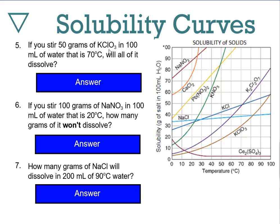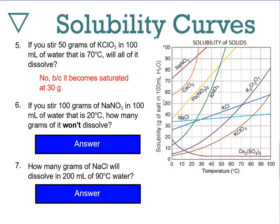If you stir 50 grams of potassium chlorate in 100 mL of water at 70°C, will all of it dissolve? The potassium chlorate curve at 70°C shows roughly 30 grams dissolve. So putting in 50 grams — no, not all of it will dissolve; 20 grams would fall to the bottom. To supersaturate it, you'd put your 50 grams in, raise the temperature above 90°C, then slowly cool it, hoping it doesn't crystallize spontaneously — sometimes solutions just won't supersaturate because the crystal structure forms spontaneously.